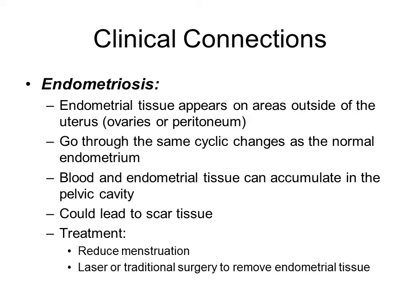Endometriosis is when endometrial tissue appears outside of the uterus, oftentimes on the ovaries. It's stimulated by hormones to go through the monthly cycle of increasing tissue and blood flow. The endometrial tissue outside the uterus accumulates blood and tissue, which can be released into the pelvic cavity. This can be very painful and lead to scar tissue. Treatment options include medications and ultimately surgery to remove the misplaced endometrial tissue.